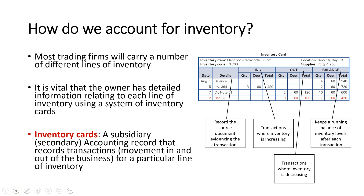So how do we account for inventory? We use inventory cards, which you would have seen in Unit 1 and 2 or Year 11 accounting. Most trading firms carry a really high number of inventory items, and every single item of inventory will have its own inventory card. This is because it's vital that we have really detailed information about the movement of our inventory. An inventory card is what we call a subsidiary record — subsidiary means secondary, or it sits underneath the main records, which are journals and ledgers. This accounting record shows the transactions for a particular line of inventory and the movements in and out.